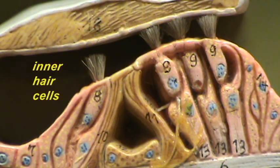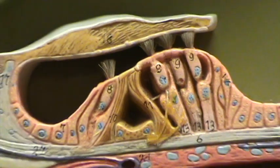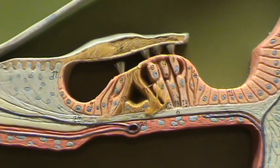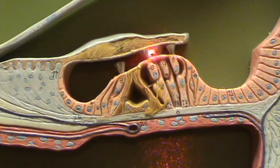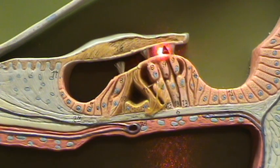When a vibration occurs, it causes a differential displacement of these cells in relationship to this tectorial membrane, and that is what is responsible for creating an electrical impulse in these cells.